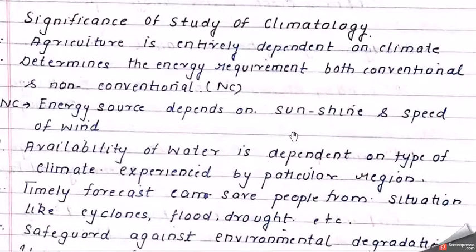Now we look at the significance of studying climatology. First, agriculture is entirely dependent on climate, since most parts of the world are rain-fed and rain depends on climate. Second, it determines energy requirements — both conventional and non-conventional. Non-conventional resources depend on sunshine and wind speed, which further depend on the type of climate. Third, availability of water is dependent on the type of climate experienced by a particular region.